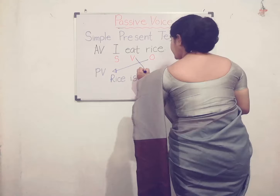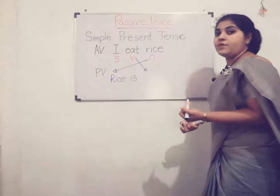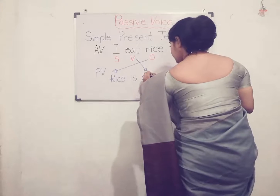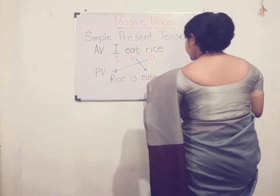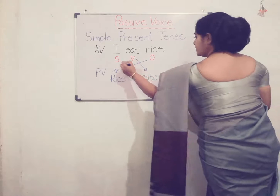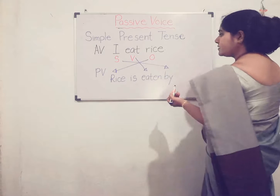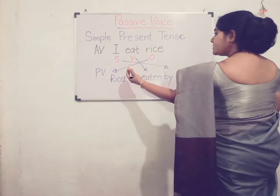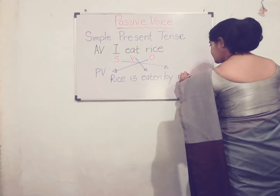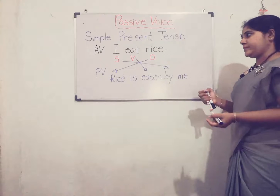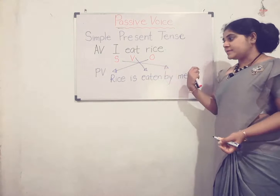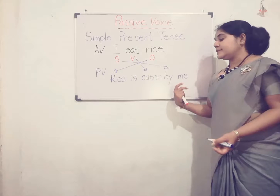Then you have to take the past participle form of the verb 'eat', which is 'eaten'. Then mention the doer by using the connector 'by'. You should take the object form of the subject 'I', which is 'me'. So the passive voice of 'I eat rice' is: 'Rice is eaten by me.'